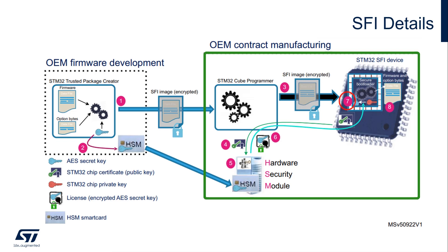The STM32 can then retrieve the AES secret key and proceeds in step 8 with firmware installation and option-byte programming. The implementation of the STM32 secure bootloader used in SFI configures the onboard STM32 security features to protect access to the user flash memory and the AES key, therefore preventing the OEM code from being extracted or disclosed during the whole process.